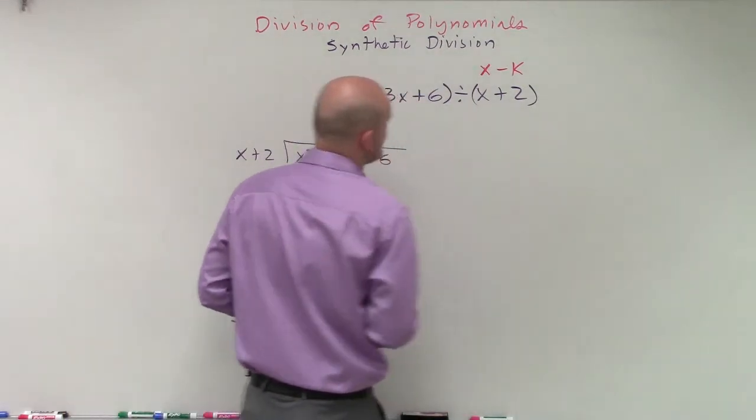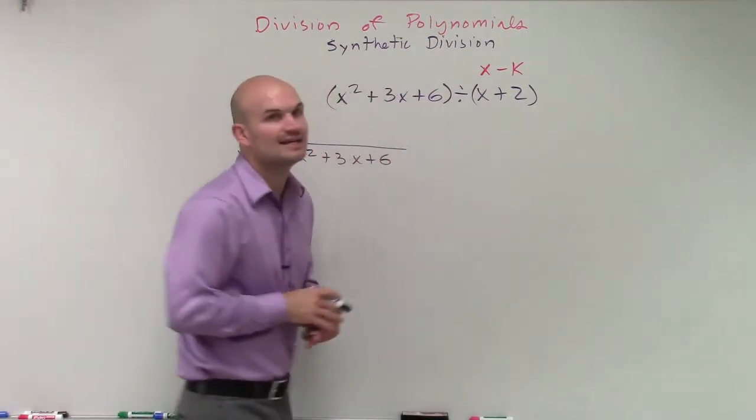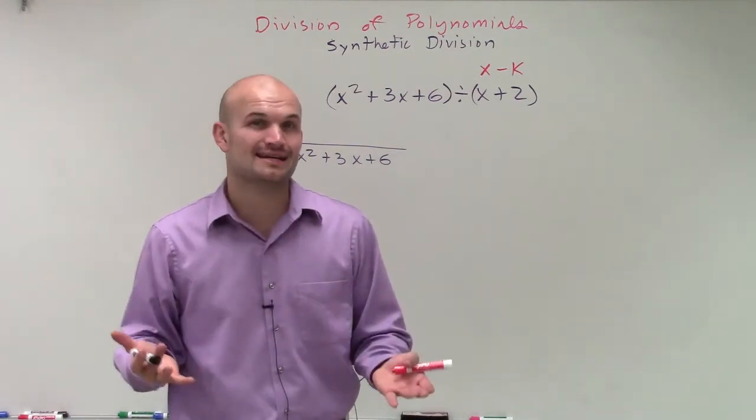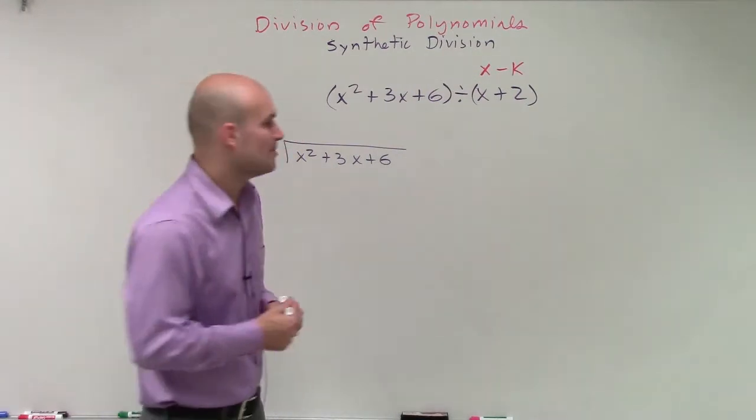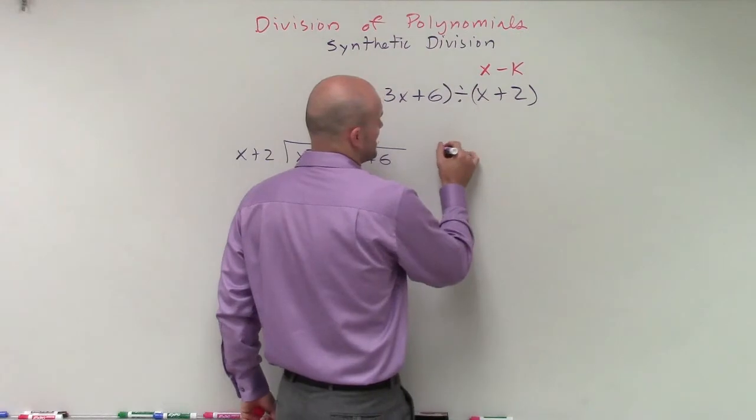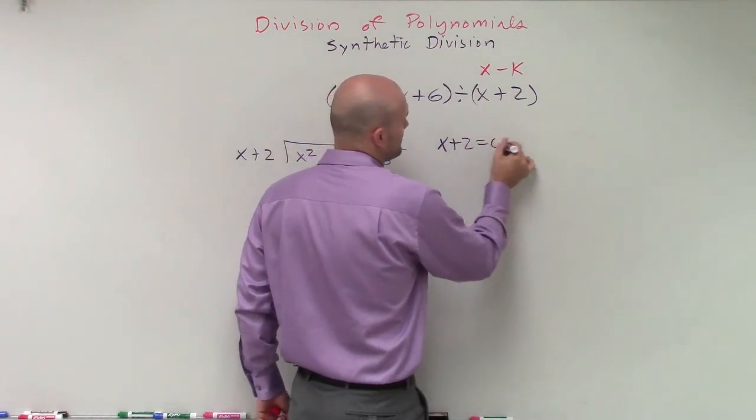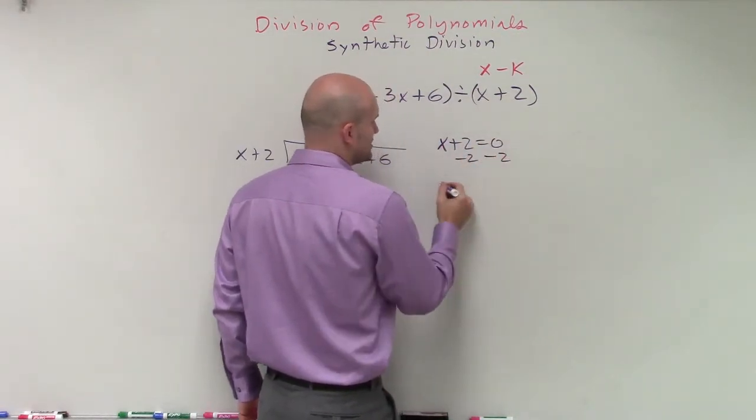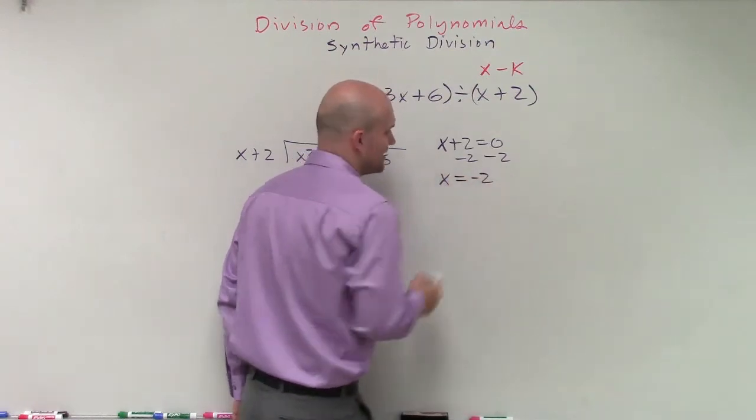And then what I'll do is I'll show you some examples of exactly how we're going to take synthetic division. So the first thing that we do is we actually take our divisor and we set it equal to 0. We'll get a little bit more in depth on why we're setting equal to 0 once we talk about zeros of polynomials. But for right now, let's just take it and we'll set it equal to 0. Then we'll solve. So in this case, we have x equals negative 2.